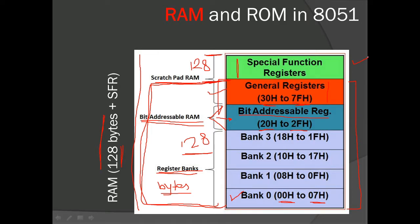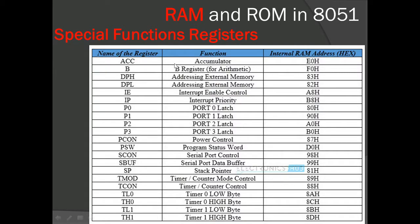The remaining 128 bytes are the special function registers. There are 21 special function registers present in 8051. The first is the accumulator, which is responsible for all arithmetic and logical operations performed by the ALU. It acts as a storage element for operands and is used in all arithmetic and logical operations. Some instructions only work on the accumulator and not on any other register.